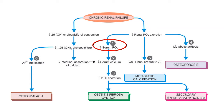This flow diagram shows the pathogenesis of manifestations in chronic renal disease. Decreased renal phosphate excretion leads to hyperphosphatemia, which causes decreased serum calcium. The parathyroid gland senses low serum calcium and responds with increased secretion of parathyroid hormone, resulting in hyperparathyroidism. This hyperparathyroidism leads to the development of osteitis fibrosa cystica, also called secondary hyperparathyroidism.